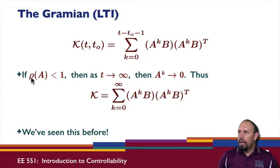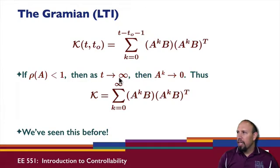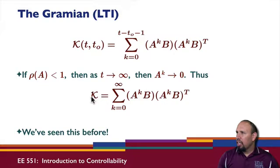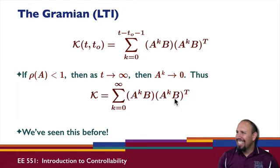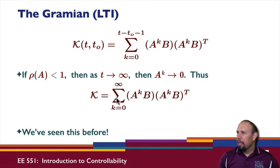If the spectral radius of the matrix A is less than one — that is, in discrete time, if the system is stable — then as t goes to infinity, A to the power k goes to zero. So our control Gramian from t0 to infinity is given by an infinite summation of all of this stuff.